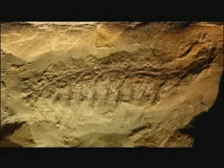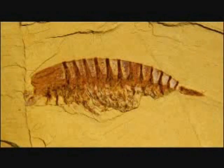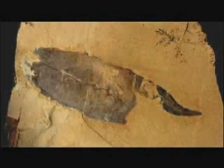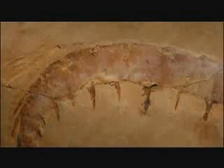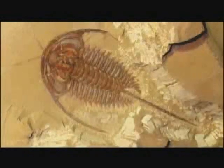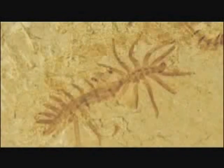The Cambrian Explosion of Life was a dramatic episode in geological history. Usually dated at about 530 million years ago, the exquisitely preserved Cambrian fossils reveal that the body plans for virtually every major animal phyla appeared — not gradually and slowly as Darwin had speculated, but instead with astonishing suddenness.